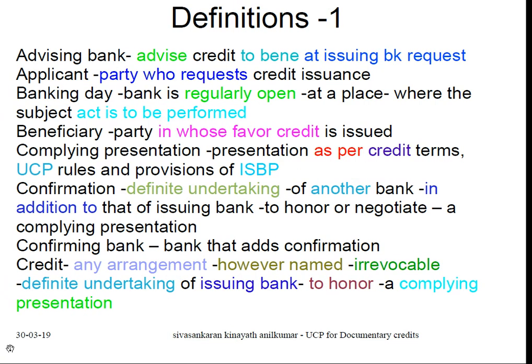Definitions: Advising Bank — the bank that advises a credit to the beneficiary at the request of the issuing bank. Applicant — the party who requests issuance of a credit. Banking Day — a day the bank is regularly open at that place for performing duties required as per the UCP. Beneficiary — the party in whose favour the credit is issued. Complying Presentation — a presentation made as per the credit terms, the UCP rules, and the provisions of the International Standard Banking Practice (ISBP). Under UCP 600, a complying presentation must comply with the credit terms, the UCP rules, as well as the provisions of the international standard banking practice applicable to documentary credits.